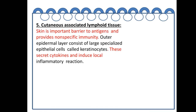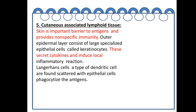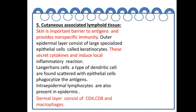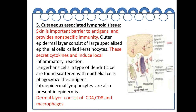Cutaneous associated lymphoid tissue: the skin is an important barrier to antigens and provides non-specific immunity. The outer epidermal layer consists of large specialized cells called keratinocytes, which secrete cytokines and induce local inflammatory reactions. Langerhans cells, which are dendritic cells, and intra-epidermal lymphocytes are also present. The dermal layer consists of CD4, CD8, and macrophages. As shown in the diagram, these cells act as both primary and secondary lymphoid organs.